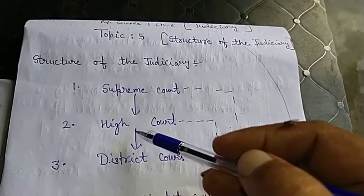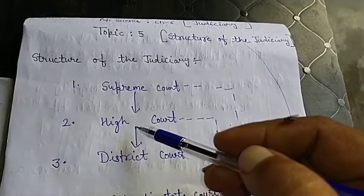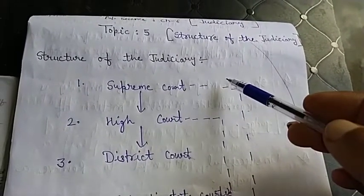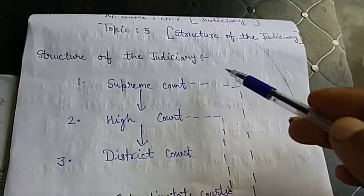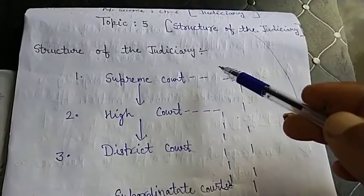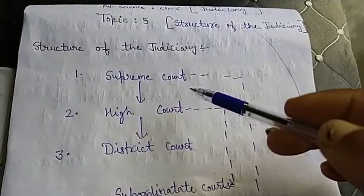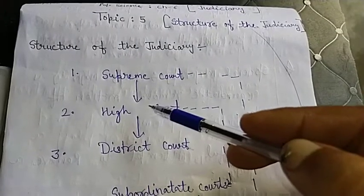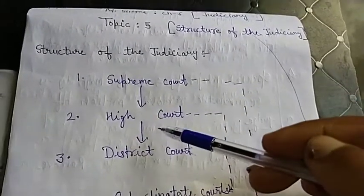The Constitution of India provides for a single integrated judicial system. When we place all the courts all together, it forms the judicial system.